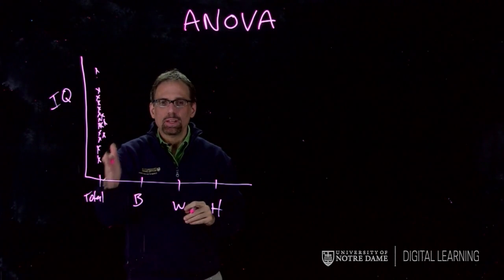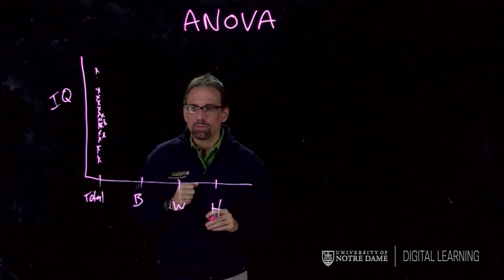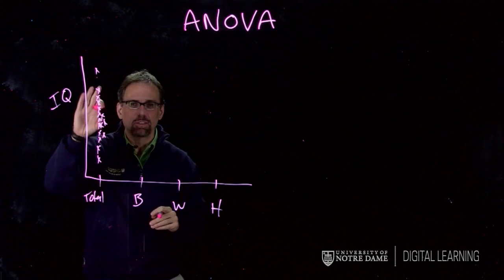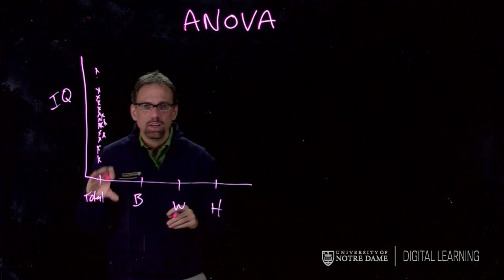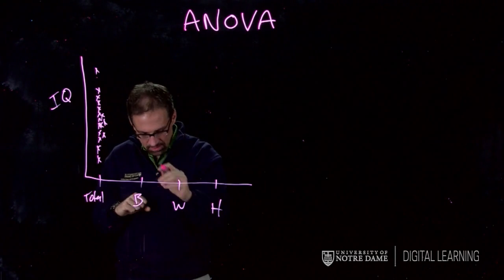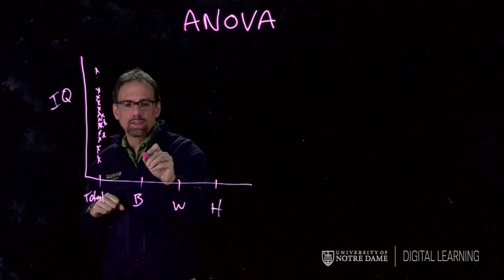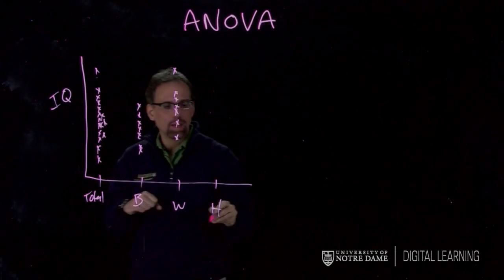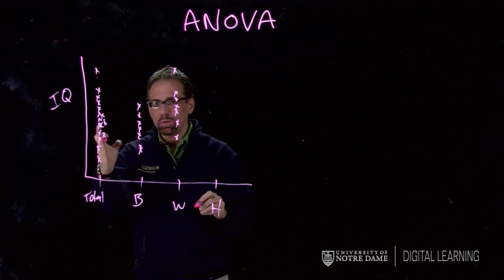Now I want to break those up into groups to do my analysis of variance. Some of these people are Black, some are White, and some are Hispanic. I want to take those out and see what they look like. Maybe it's something like this - those are the Black people from here.